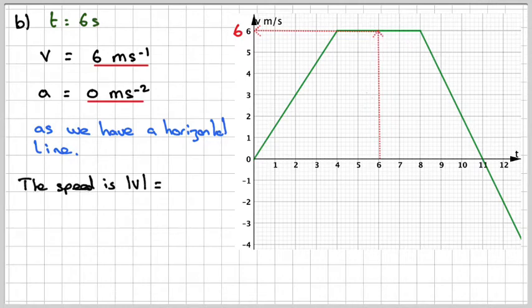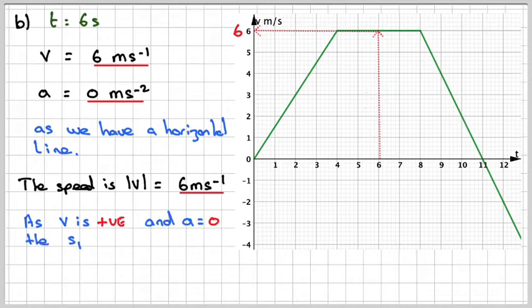The speed will be the absolute value of V, which is going to be 6 meters per second. And therefore, as the velocity is positive and A is equal to 0, A is no acceleration, the speed is constant. The speed is neither increasing or decreasing in this part of the graph, which includes our particular value of T.